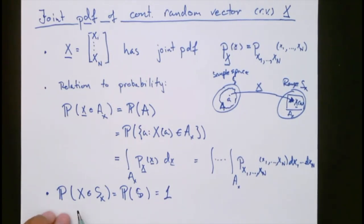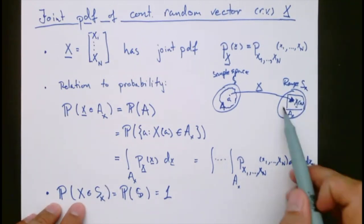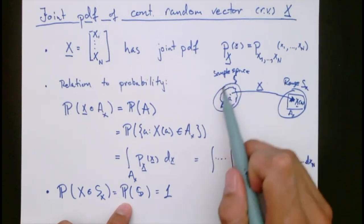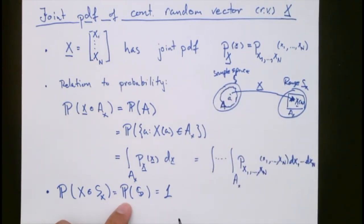It's clear from the probability, it's clear from our definition of a probability space, that the probability of x ending up anywhere in the range is the same as the probability of any outcome occurring in the sample space, which is equal to 1.